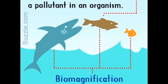In essence, biomagnification is a higher-level biological process compared to bioaccumulation. One may ask what harm small concentrations of pollutants in the environment can possibly do. The answer is significant harm, considering that the concentration of these pollutants increases as they make their way up the food chain, eventually reaching a level where they can cause health problems in organisms.